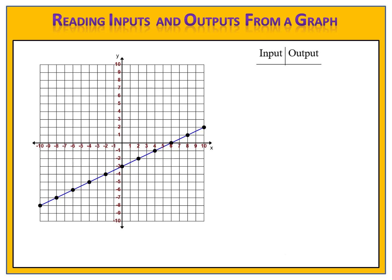We'll begin by drawing our input and output table, and let's look at the very first point on the left-hand side. We see that point, which has the coordinates (-10, -8). We know that the x is the input and the y is the output, so negative 10 is the input and negative 8 is the output. We've read this information from the graph and put it into our input and output table.